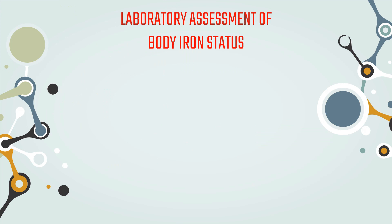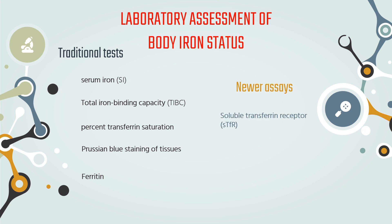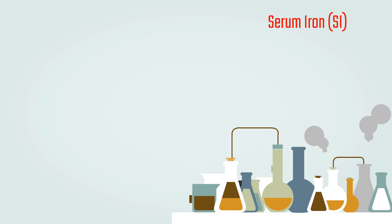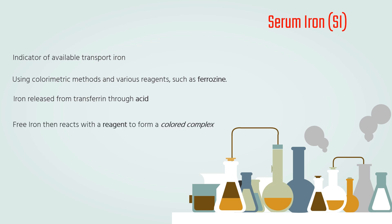Now we have laboratory assessment of body iron status. Body iron status can be determined through laboratory assessments, which include traditional tests such as serum iron, total iron binding capacity, percent transferrin saturation, and Prussian Blue staining and ferritin assays, as well as newer tests like the soluble transferrin receptor, reticulocyte hemoglobin content, and zinc protoporphyrin. Serum iron is an indicator of available transport iron. The measurement of serum iron can be done using colorimetric methods and various reagents such as ferrozine. The process involves releasing iron from transferrin through acid, then reacting the freed iron with a reagent to form a colored complex detected using spectrophotometry. Serum iron levels alone have limited usefulness due to high variability within and between days, as well as increases after consuming iron-containing foods and supplements.